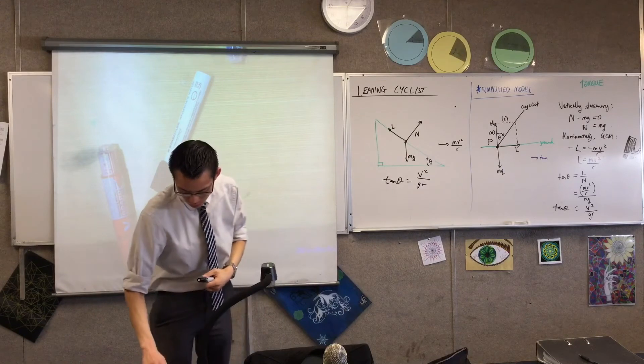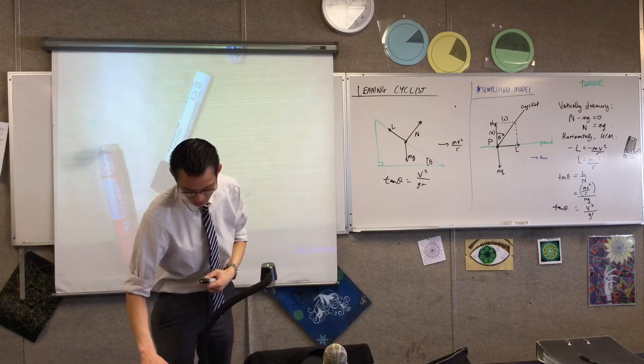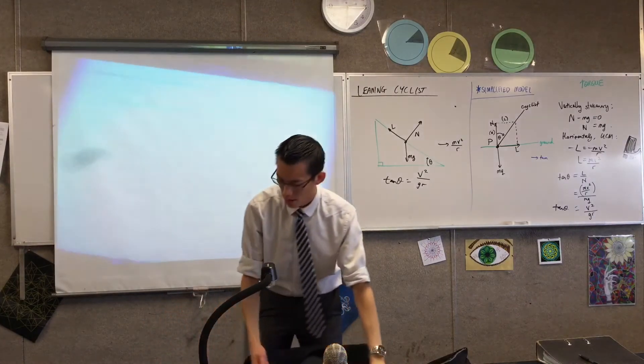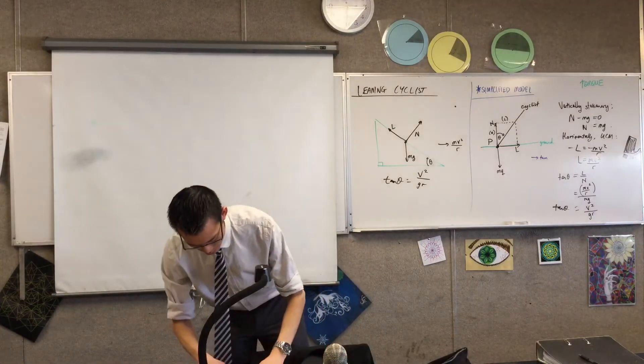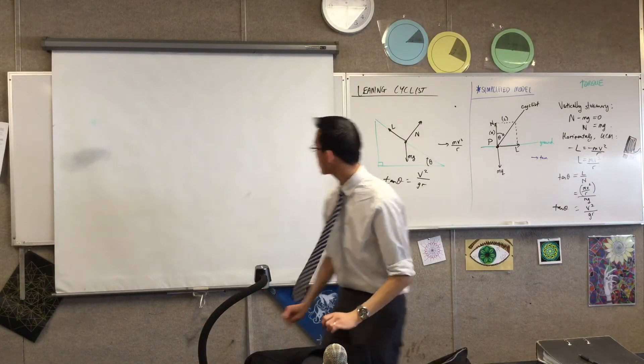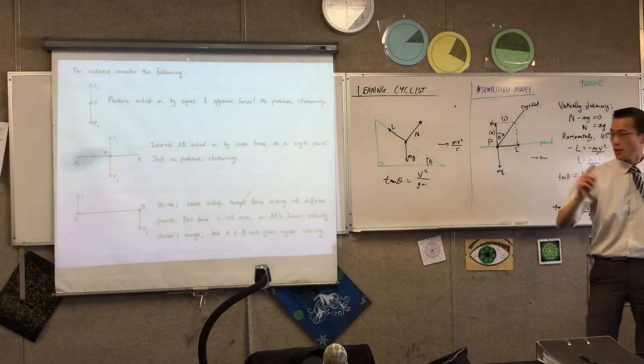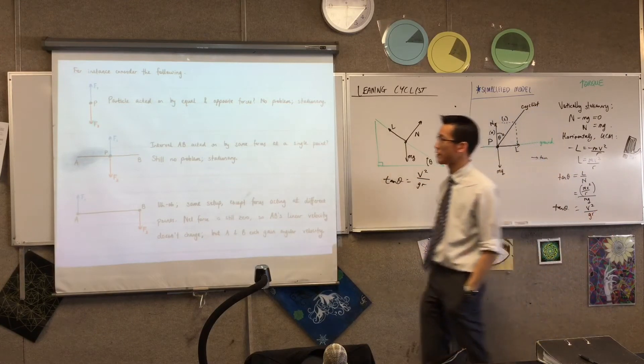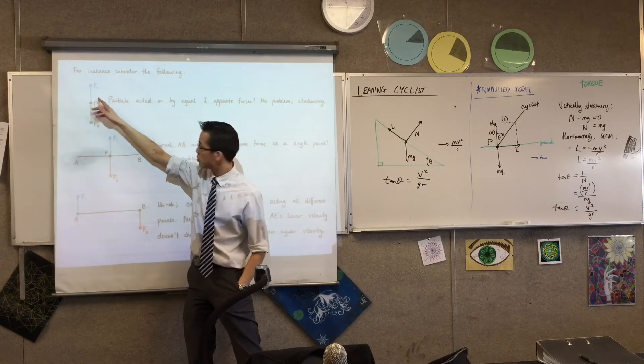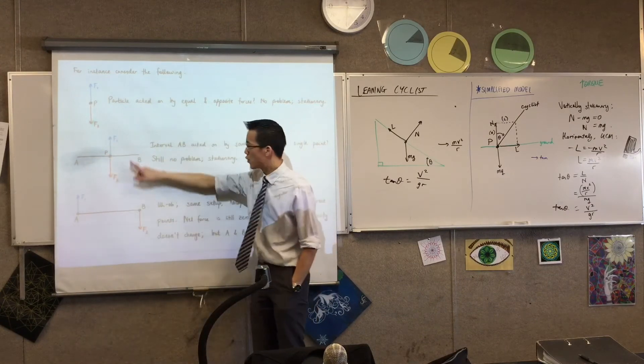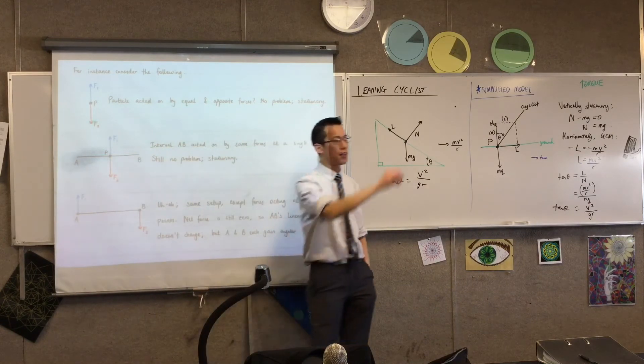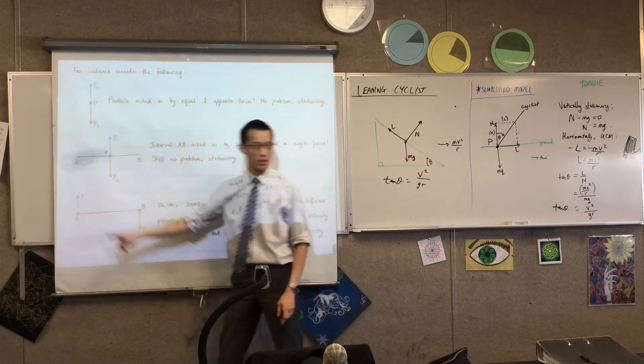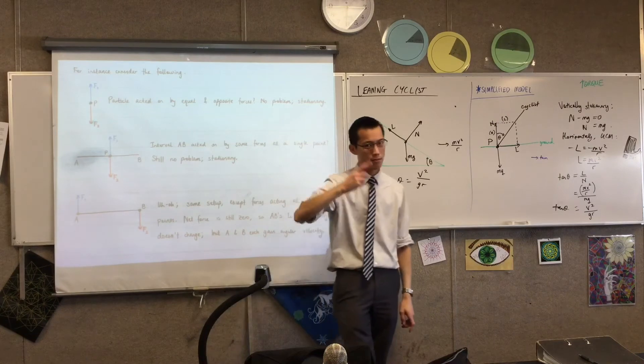So I just want to quickly show you these diagrams you might want to have. These are the cases that I just went through. It's important to have some diagrams that look like this. If you've got opposite and equal forces on a point, no dramas. If you've got opposite equal forces on the same point in an object, still no problem. But if you move them to other positions, that's when you add angular momentum.